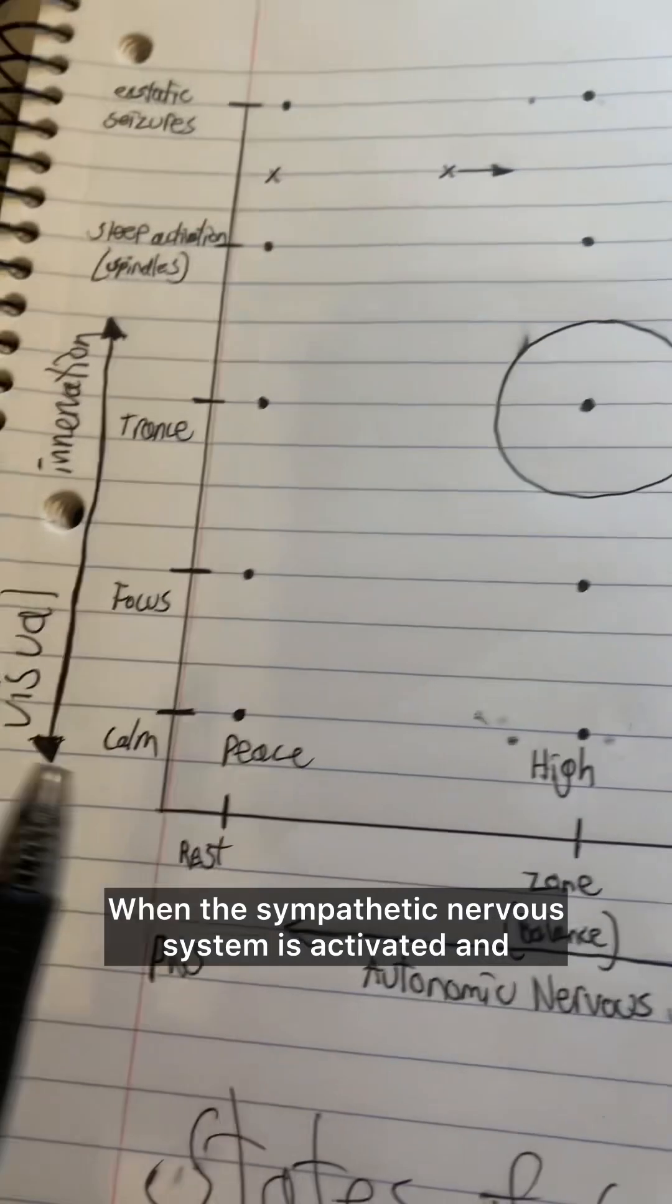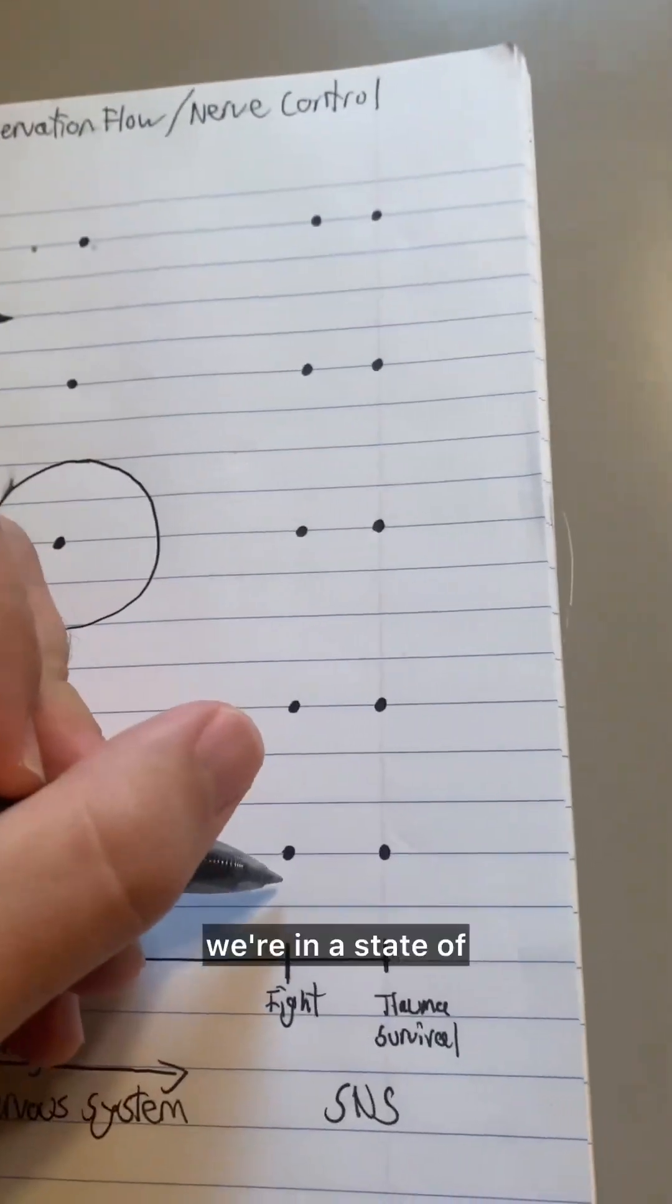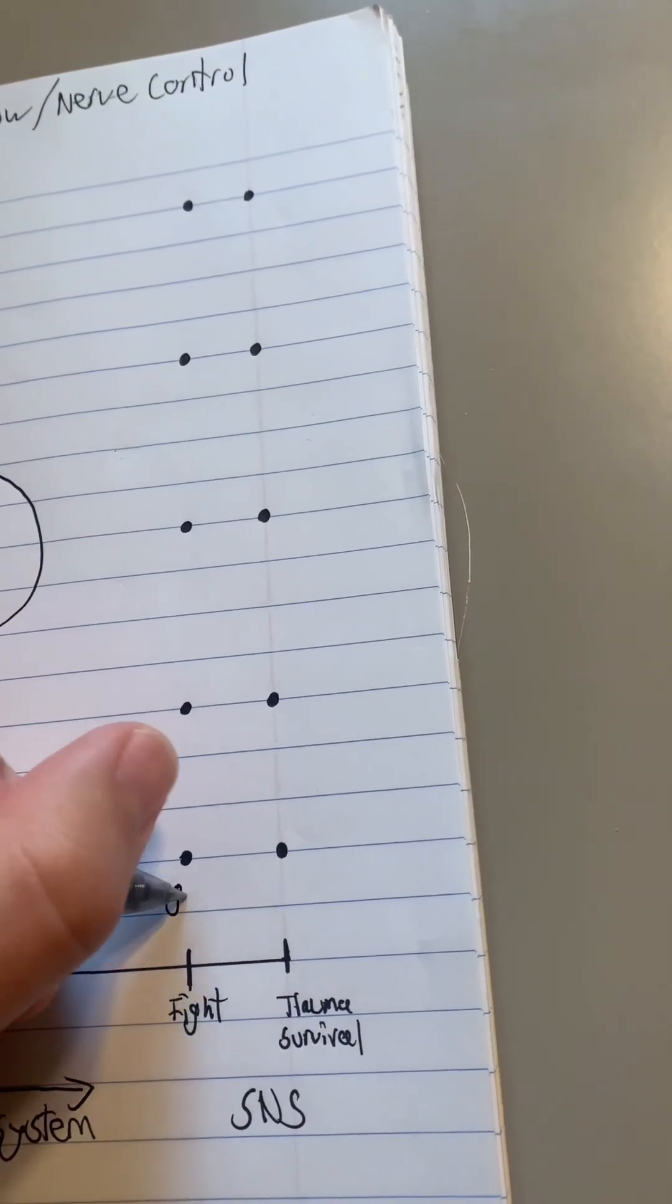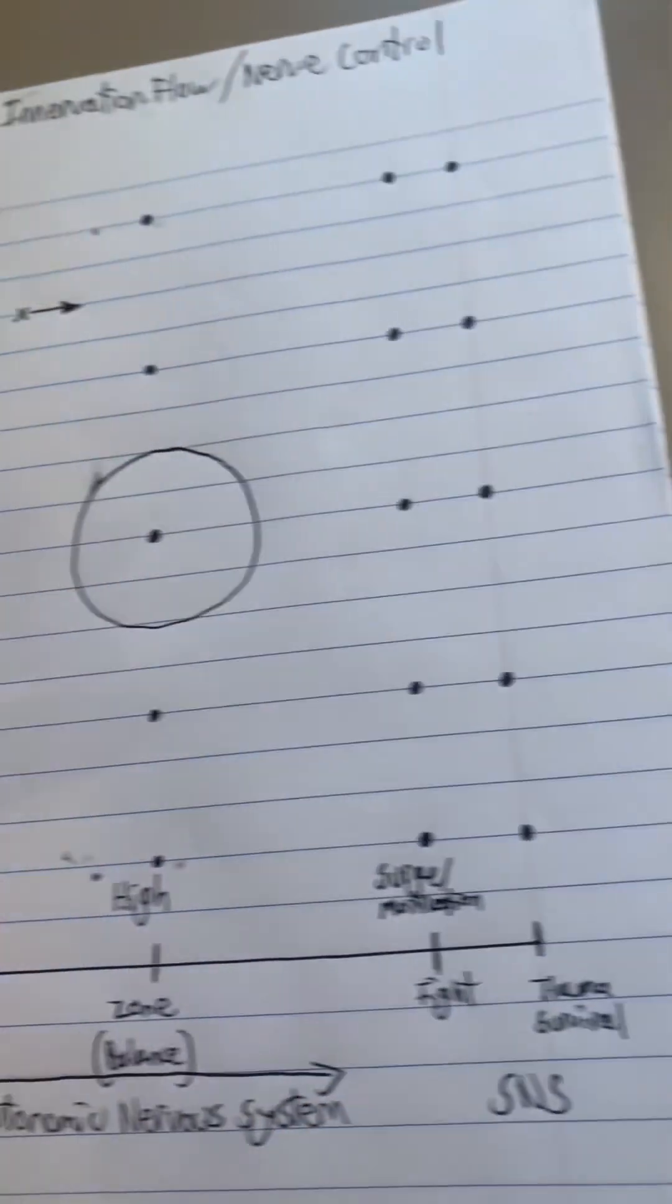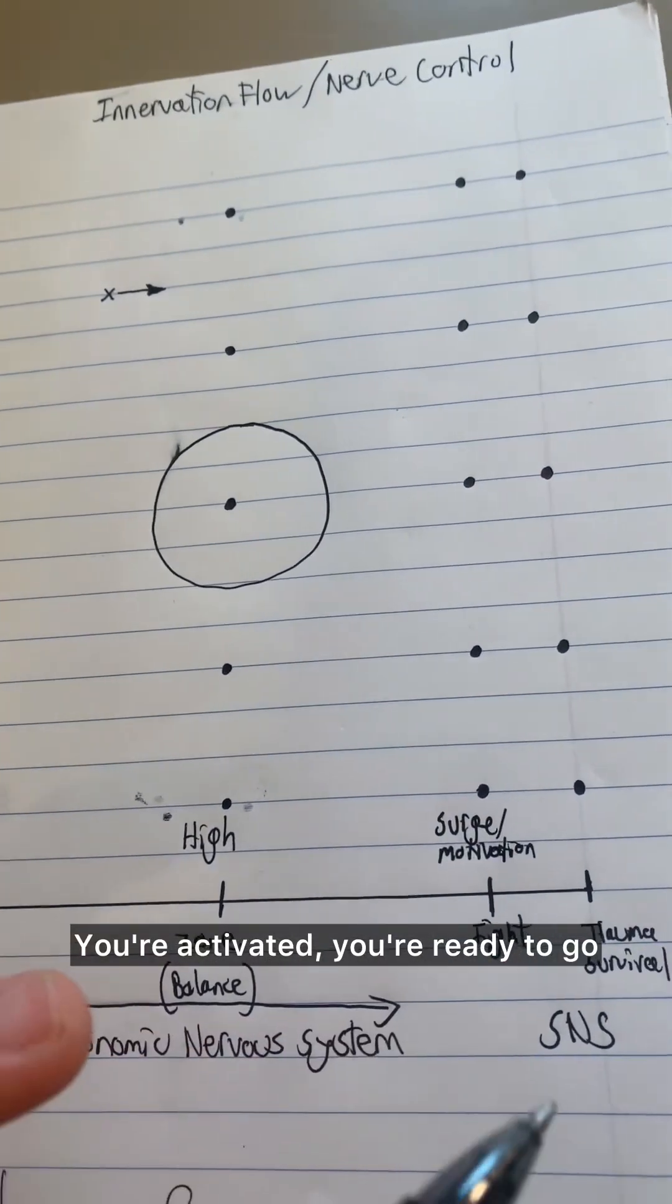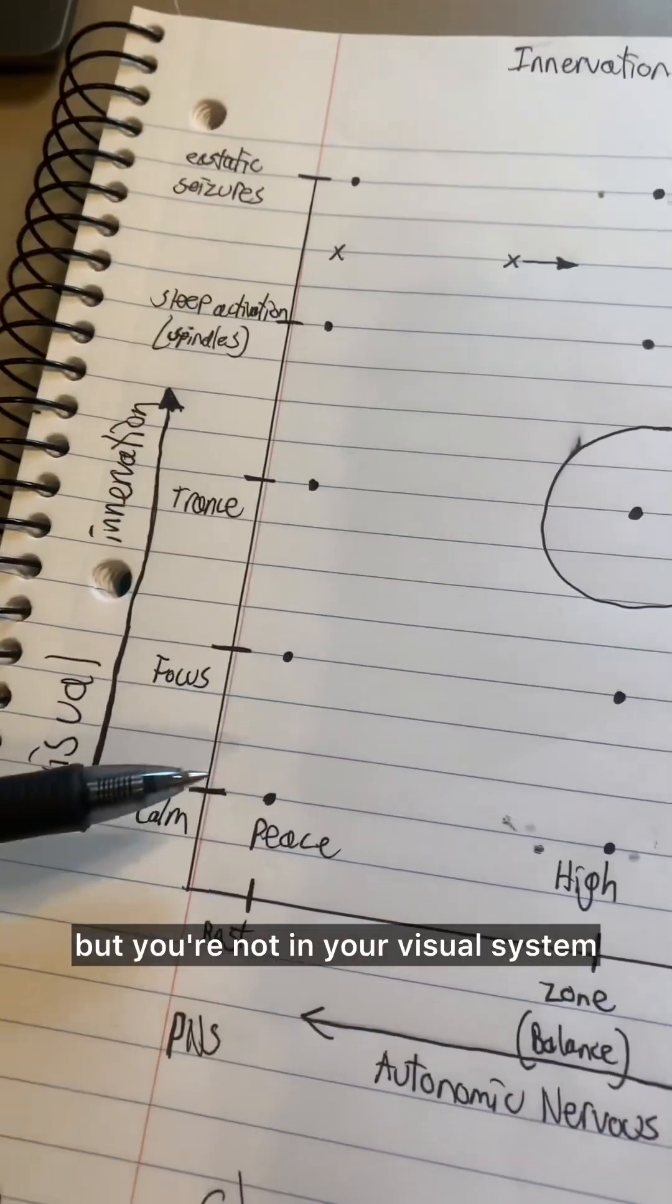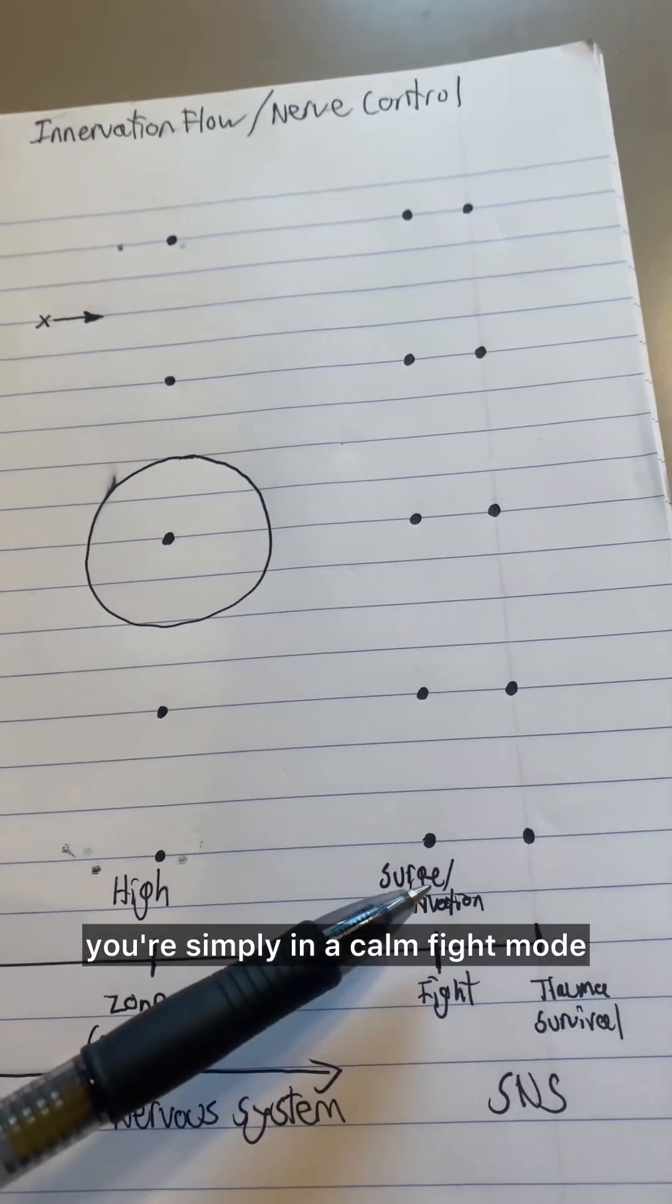When the sympathetic nervous system is activated and the visual signals are calm, we're in a state of surge. Or we could say motivation. You're activated, you're ready to go, and you're doing stuff. But you're not in your visual system. Visual innervation is calm. You're simply in a calm fight mode.